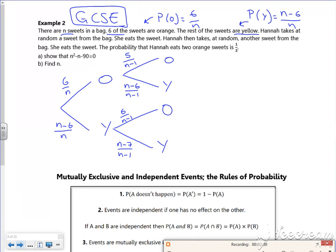Now it tells you that the probability that we eat two oranges is a third. So two oranges is this top line.